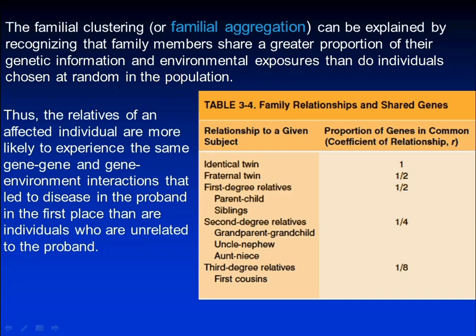Here are family relationships and shared genes. Identical twins have 100 percent of genes in common. Fraternal twins and first degree relatives share 50 percent of genes. Second degree relatives share 25 percent of genes.